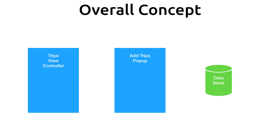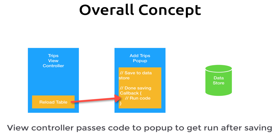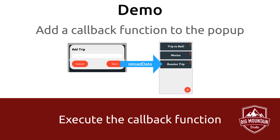So how are we going to do this? There are a few different ways. If you've watched my series on reusable pop-ups, you know I've described three ways to do this in the past. But in this app we're going to use callbacks. In the add trips view controller, we will have a place where code can be assigned — a callback function. Then we will pass that code to be run after the save occurs, and that code just says reload the table view because we want to show the new data.